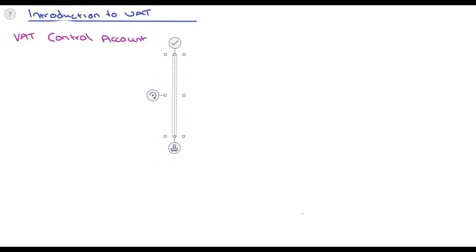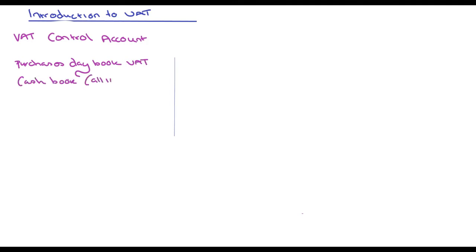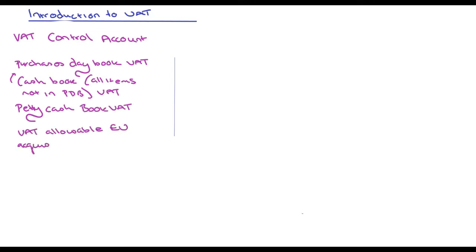Looking at what a VAT control account would look like, on the debit side — the left-hand side — you have the purchases day book VAT element, the cash book VAT element for items not in the purchases day book made on cash, the petty cash book VAT element, VAT allowable from EU acquisitions, and potentially bad debt relief. All of these appear on the debit side of the VAT control account.